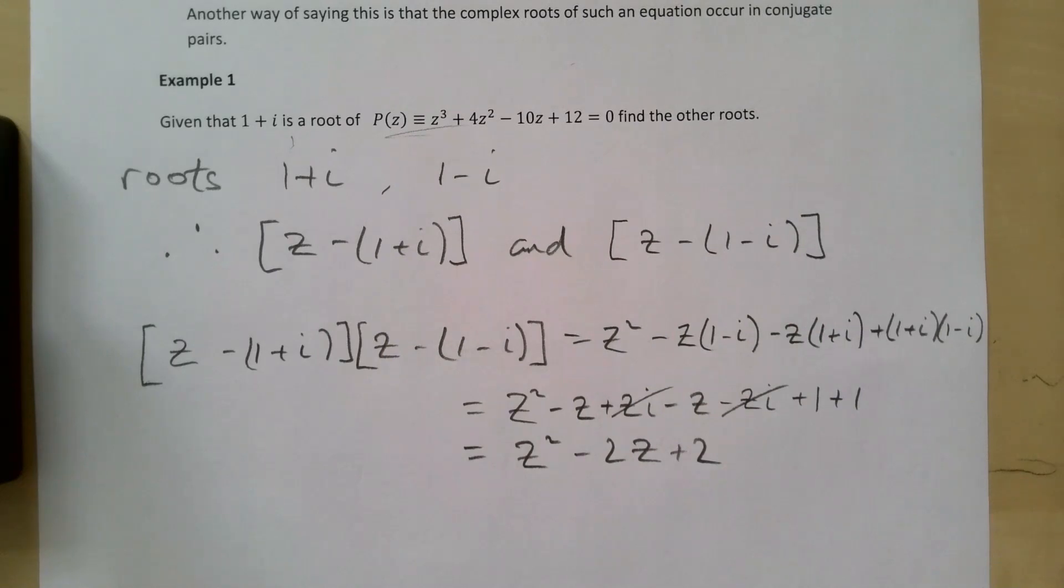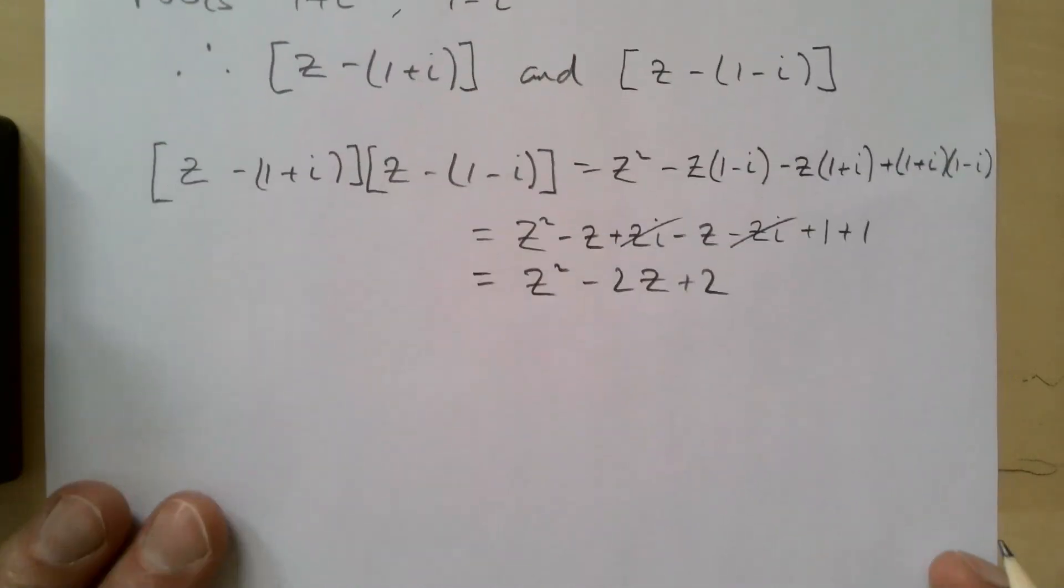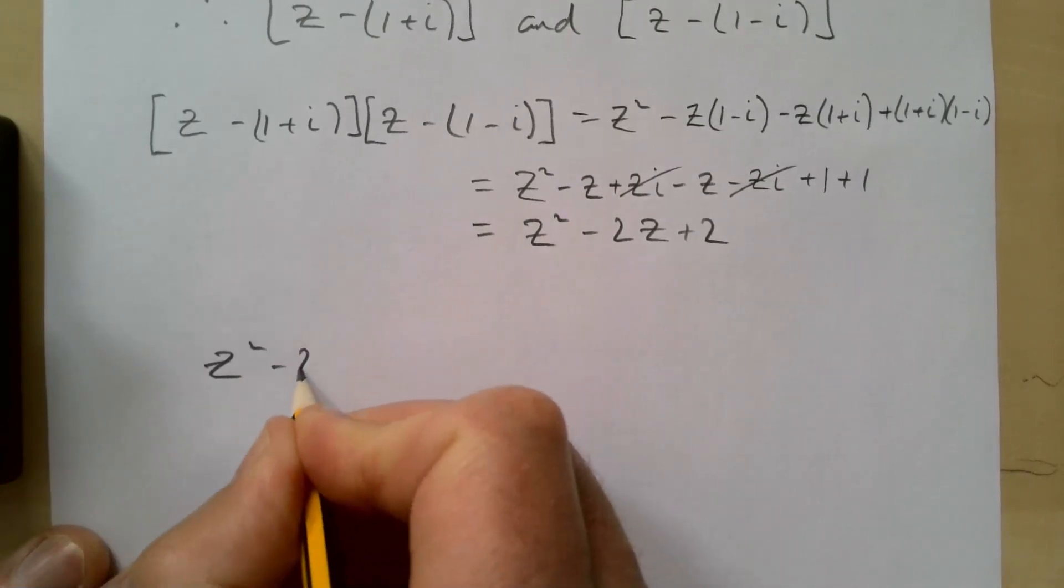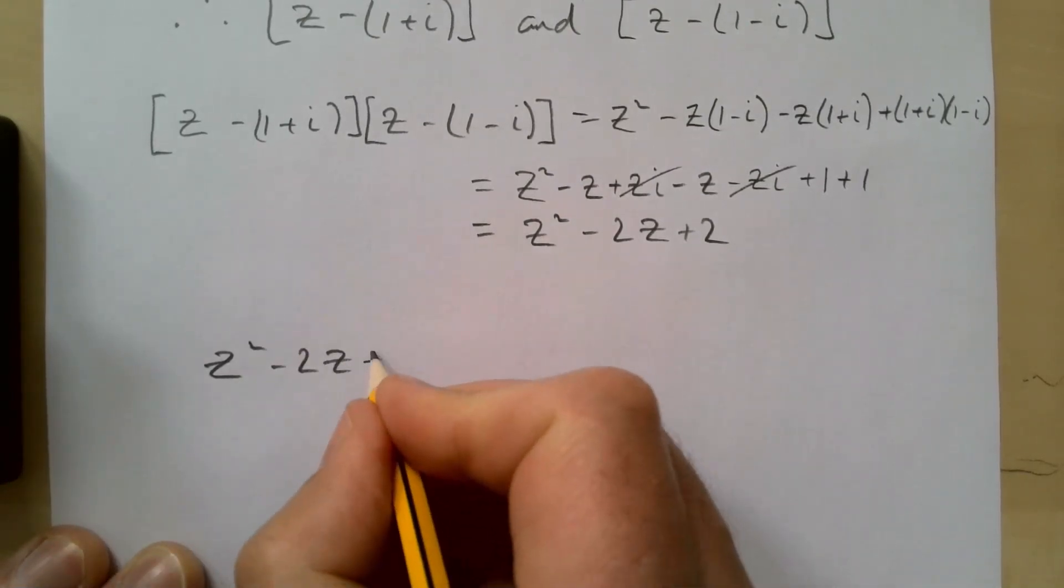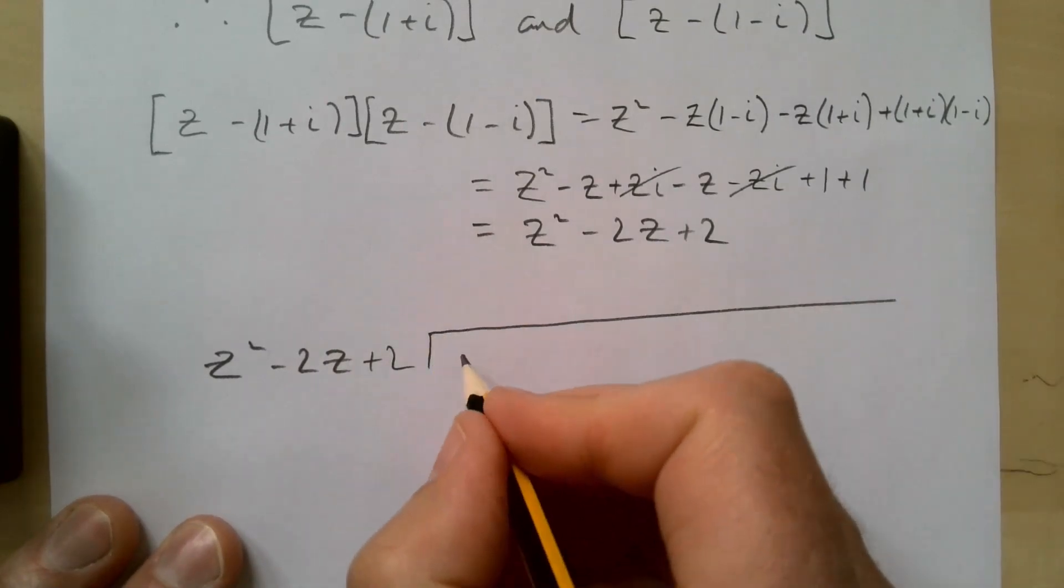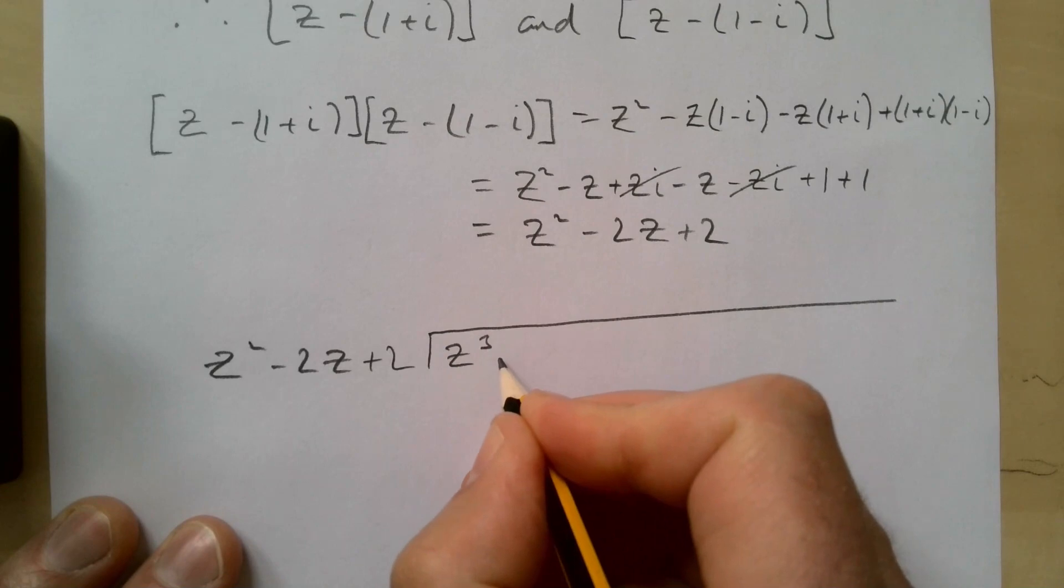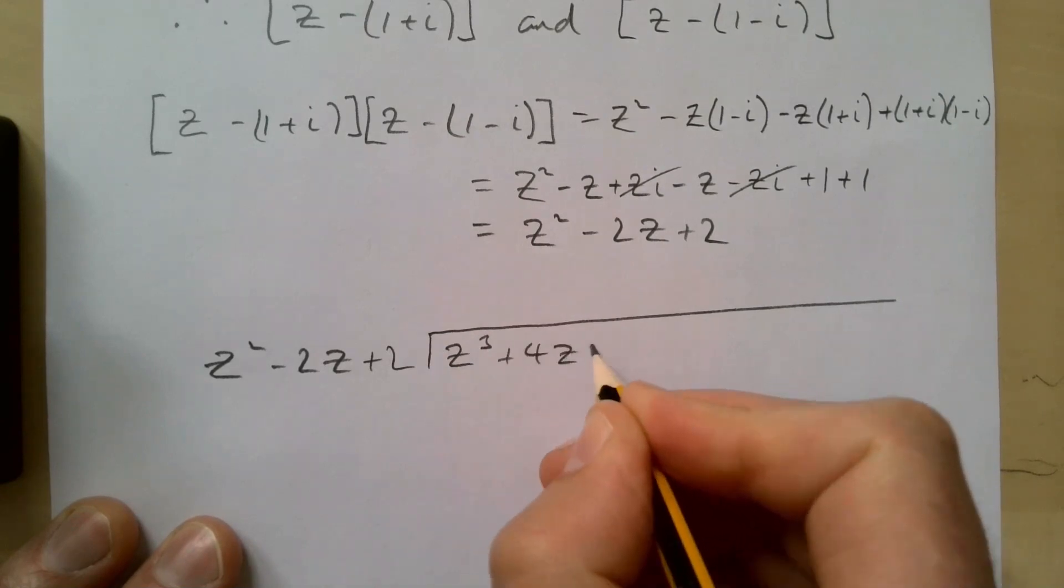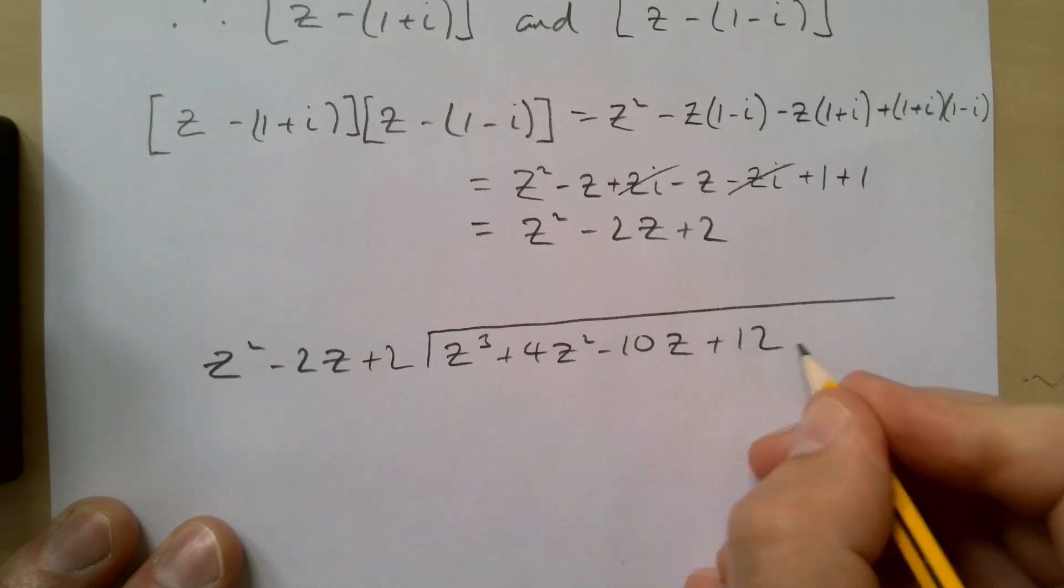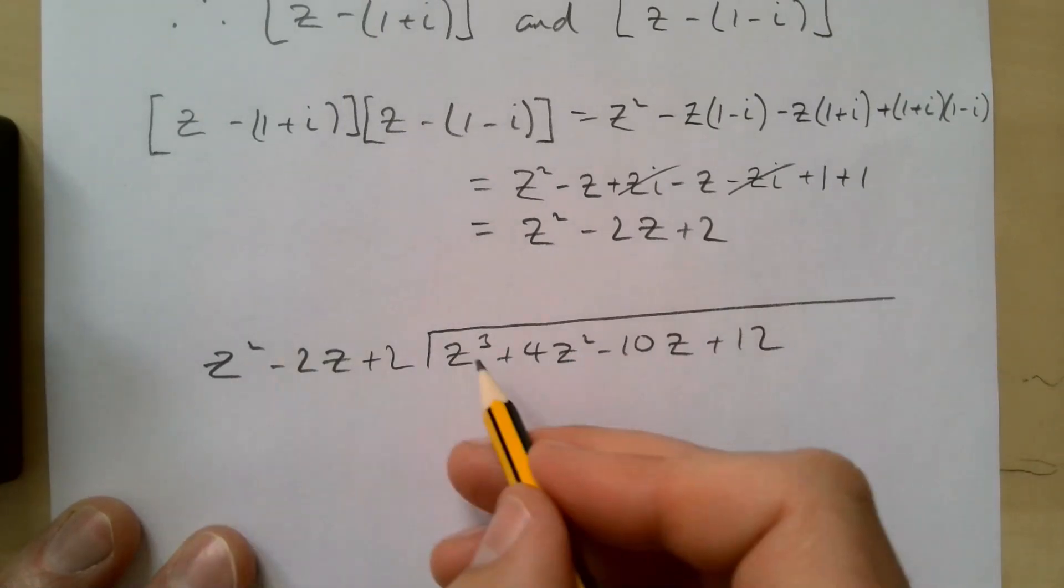Let's do our long division. z² - 2z + 2, and we're doing a long division, and we're going to divide that into z³ + 4z² - 10z + 12. z² times what gives me z³? And that's of course going to give me z.